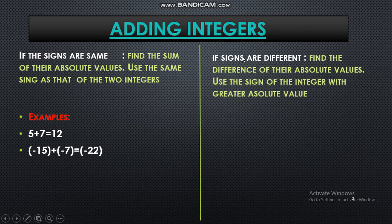Now what if the signs are different? Then first you have to find out the difference of their absolute values. Difference means what? First, subtract those numbers and then use the sign of the integer with greater absolute value. Confused? Let's have some examples. Okay, now see this example.